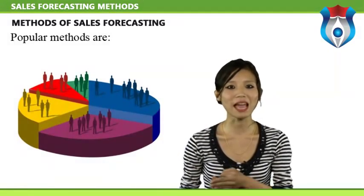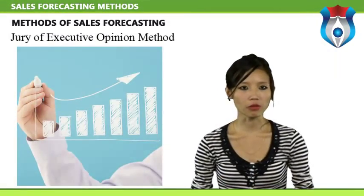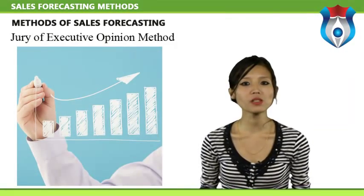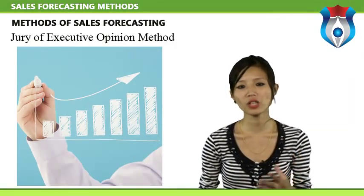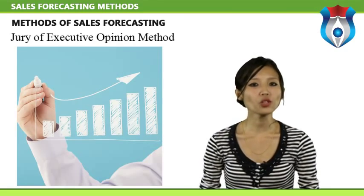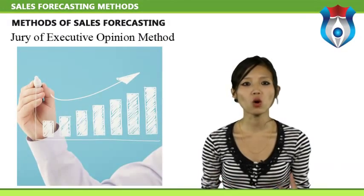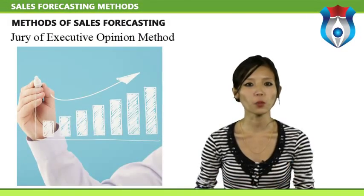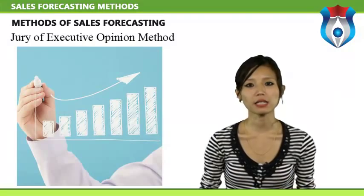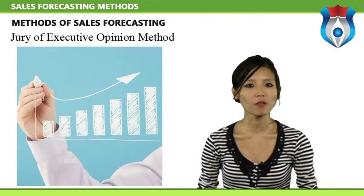Popular methods of sales forecasting include the time series analysis method, the salesforce estimation method, and the jury of executive opinion method. The jury of executive opinion method is a forecasting approach using a composite forecast prepared by a number of individual experts. The experts form their own opinions initially from the data given and then revise their opinions according to the other experts' opinions. Finally, the individual final opinions are combined.